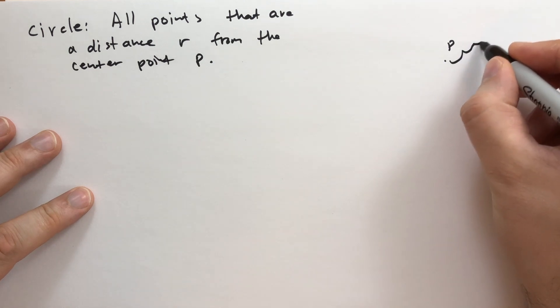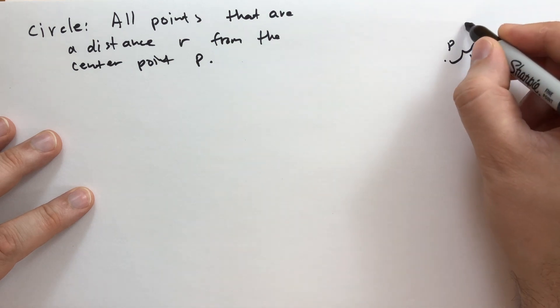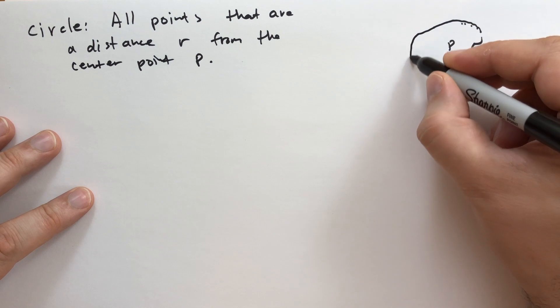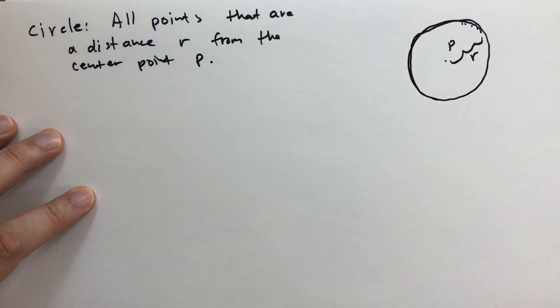And graphically, what that looks like is we have a point P, and then we have some distance R, and there's a point that's a distance from that point P. And there's another point that maps out, there's all these points that are the distance R, and I'm terrible at drawing circles. That's the circle.